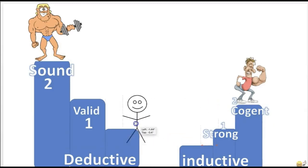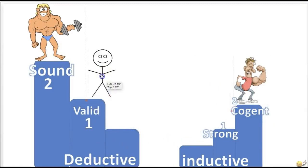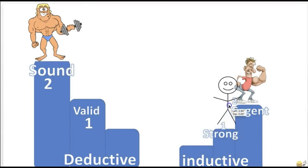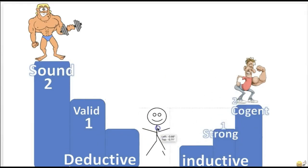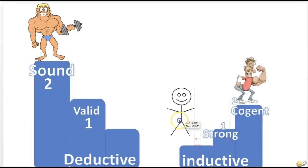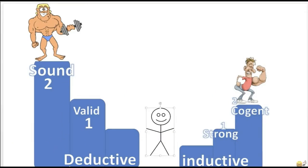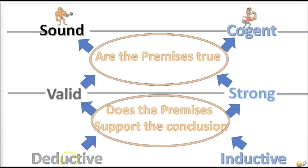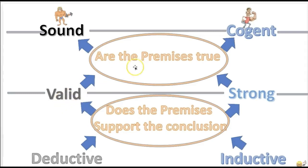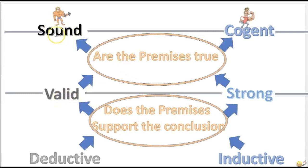To work your way up to a sound argument, you ask these questions. First: do the premises support the conclusion? If so, it's valid. Next step: are the premises true? If they're true, now you've got a sound argument. Likewise with inductive arguments: first, do the premises support the conclusion? If so, it's strong. Next: are they true? If so, it's cogent.